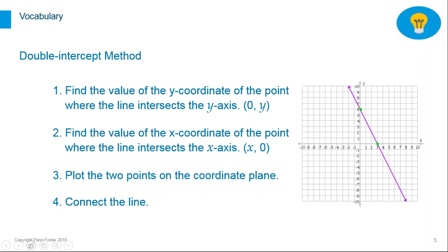As you see on the graph, this purple line intersects the x-axis and the y-axis at these two green points. So our job is to find these two points, plot them, and connect the line to graph it.